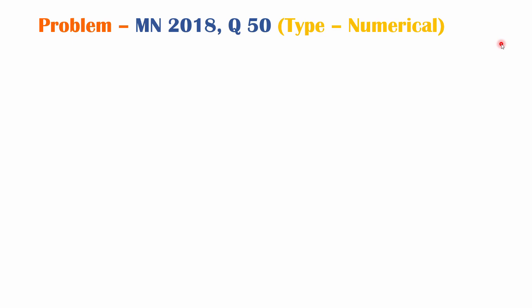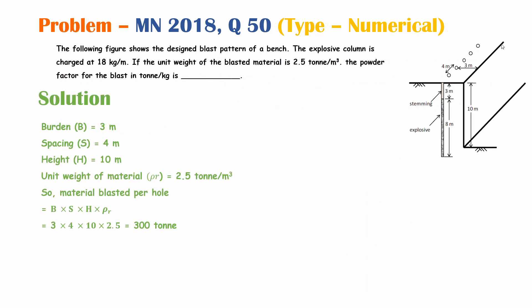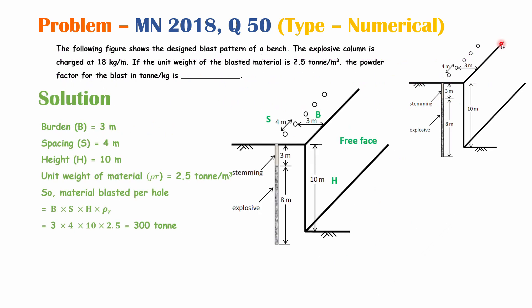Let's solve one more question from GATE 2018, question number 50. The figure shows the designed blast pattern of a bench. The explosive column is charged at 18 kg/m. The unit weight of the blasted material is 2.5 ton/m³. Find the power factor for the blast in ton/kg. From the figure: burden = 3 m, spacing = 4 m, bench height h = 10 m, explosive charge length = 8 m, stemming = 3 m.